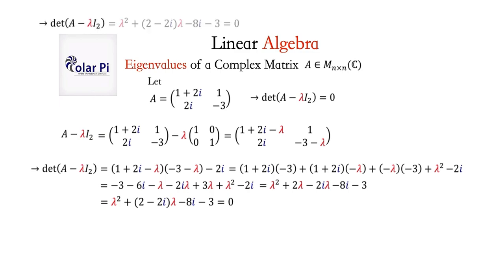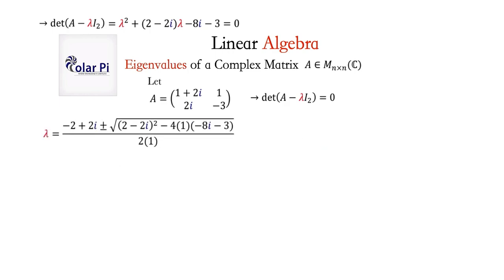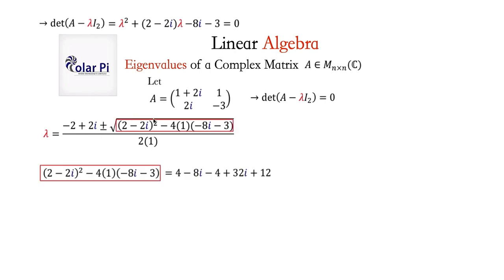Here, I don't see any other choice but to use the quadratic formula. Let's first write the reminder of what the determinant looks like, so we can use the quadratic formula. The quadratic formula is minus b plus or minus the square root of b squared minus 4ac, divided by 2a. There's a lot of simplifying work remaining to get to the two eigenvalues. Let's consume it in pieces — let's look at the quantity inside the square root. We simplify by foiling as required and distributing the minus 4, which gives us this. Collecting like terms, what we have is simply 12 plus 24i.